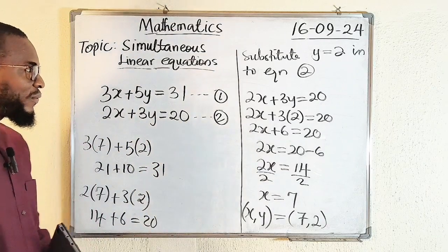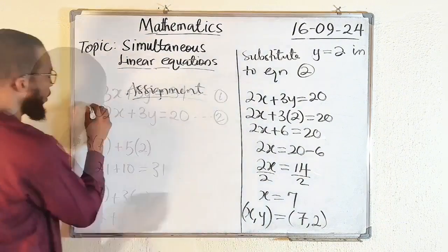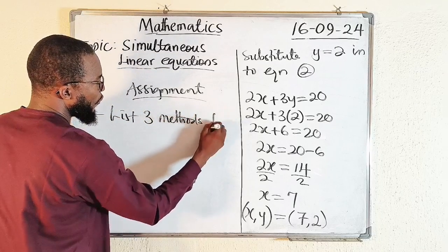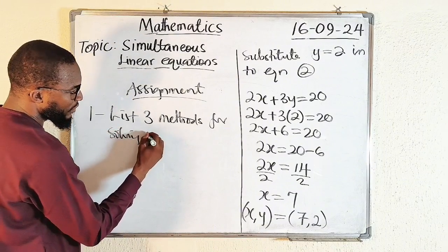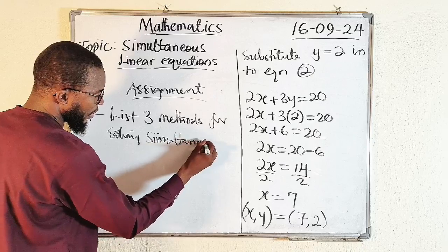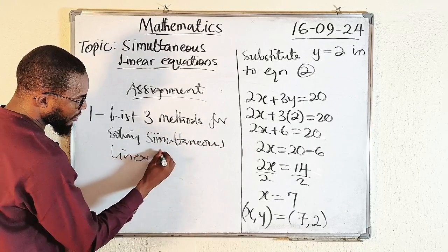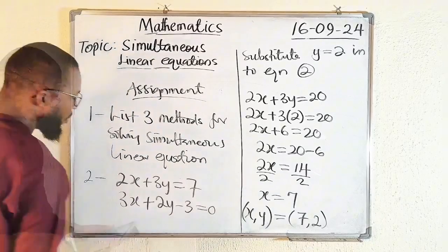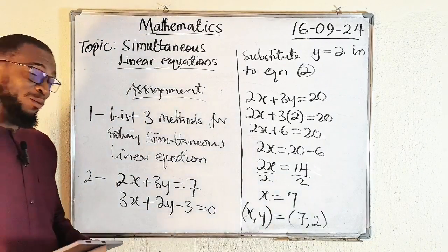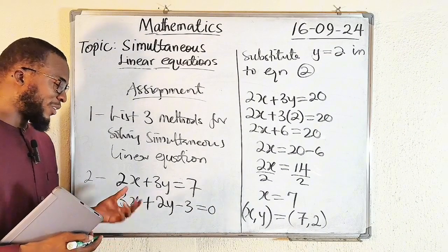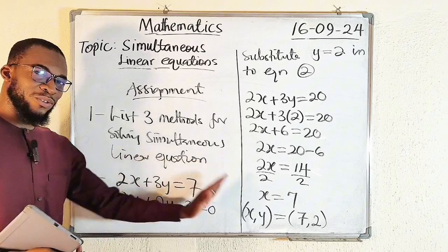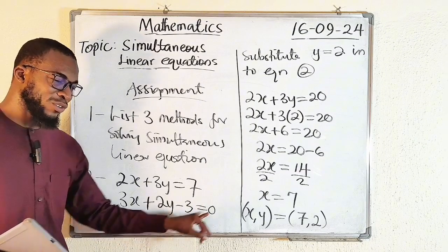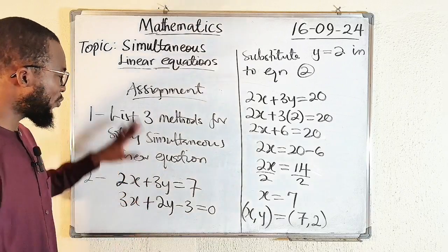For your assignment: number one, list three methods for solving simultaneous linear equations. Number two, solve the given system of equations. Note that the equations may appear in the form where terms of x and y minus a constant equals zero — but once you take the constant to the other side it becomes positive, giving you a form similar to the first equation we worked with.